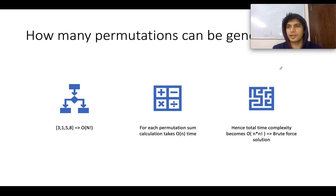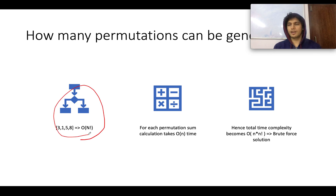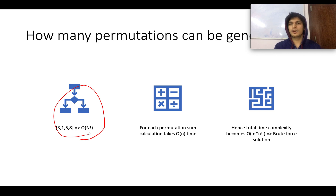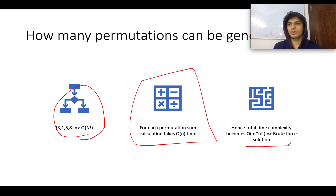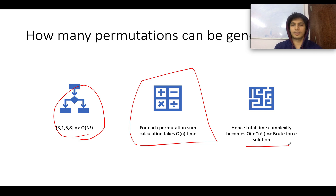How are you going to generate all the permutations? There are n-factorial ways for generating the permutations. You need to take the sum of each cost as you walk through the permutations, which takes O(n) per permutation. The total complexity rises to O(n * n!) for the brute force solution. We are not going to do this because that will be way too time consuming.